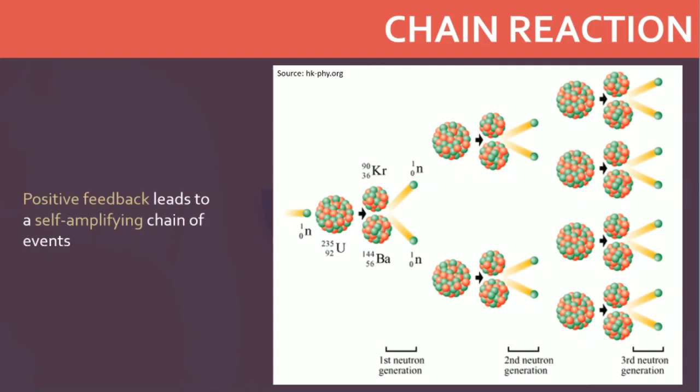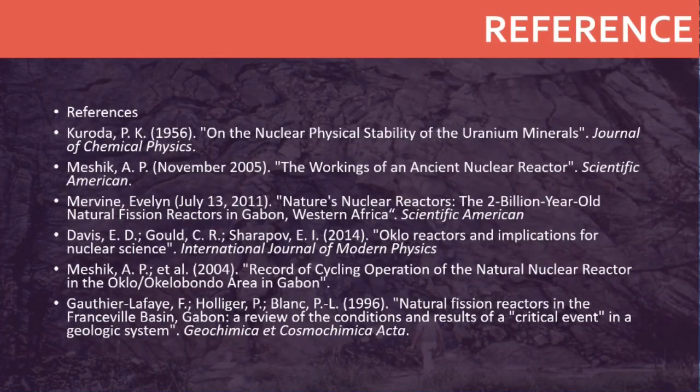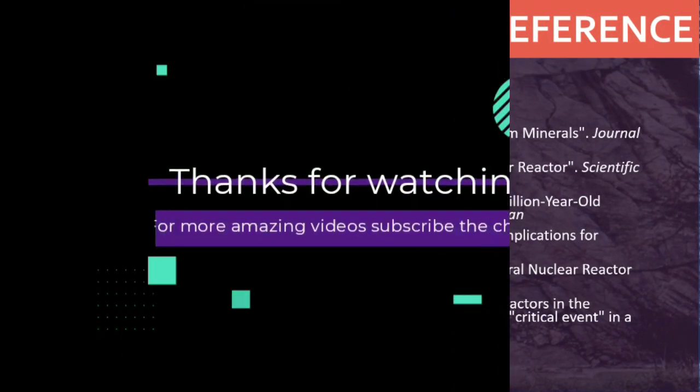To control nuclear chain reactions in manmade reactors, water is used as both a moderator and as a coolant. To control or shut down a nuclear chain reaction, control rods are used. These control rods consist of elements such as silver, iridium, and cadmium that are capable of absorbing neutrons without undergoing fission. Boron, another element very good at absorbing neutrons without undergoing fission, can also be added to water surrounding a nuclear reactor to moderate or shut down a nuclear reaction. In part two, we shall see how the Oklo natural reactor formed and operated.